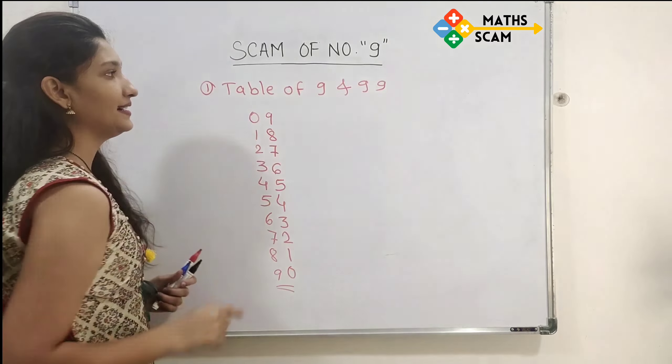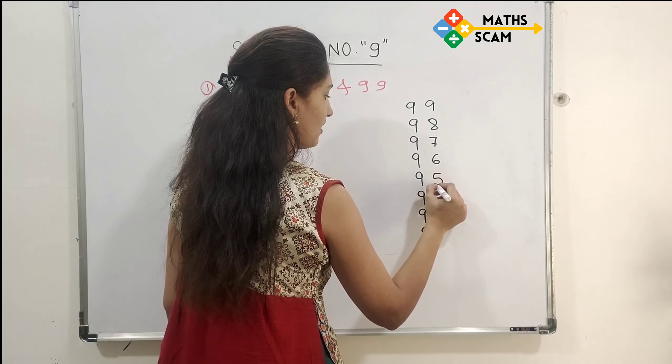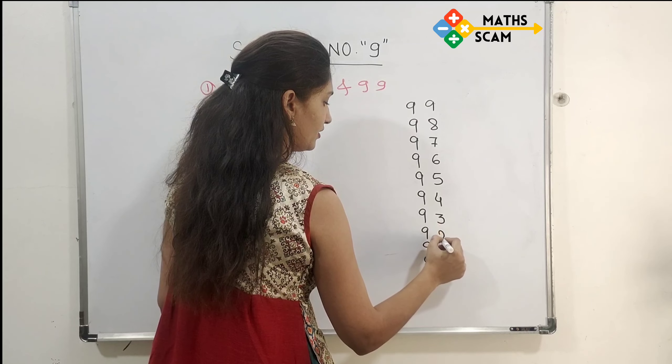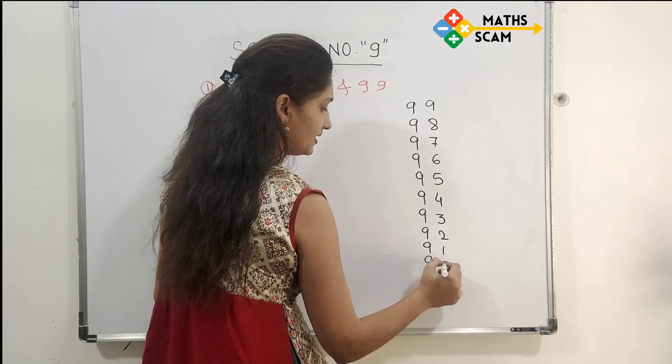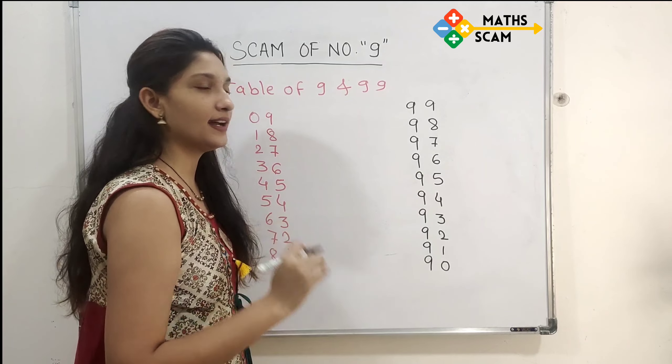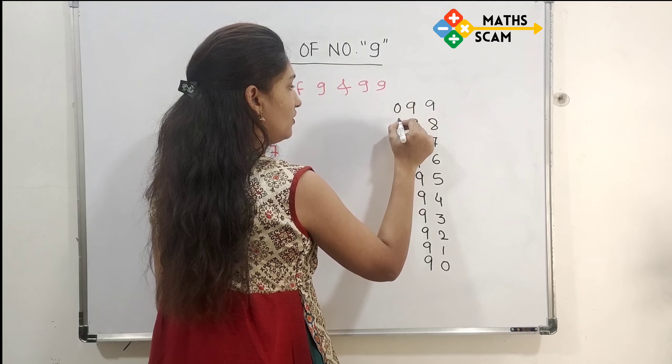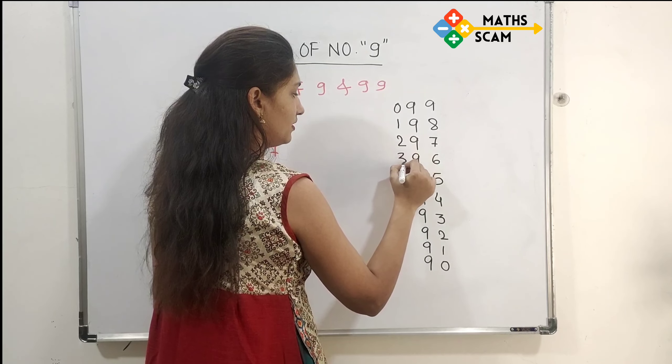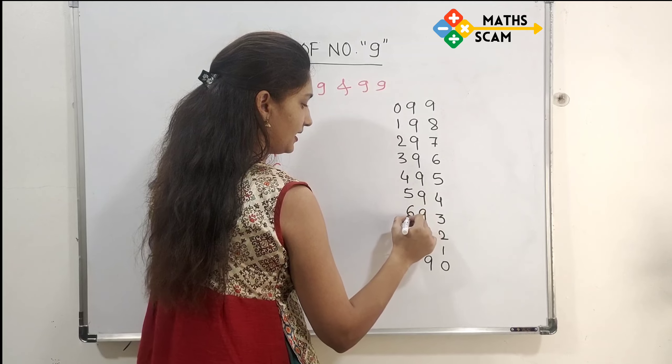Next, let's write the table of 99. Write 9 in the middle as it is. On the right side, write 9 to 0 in descending order: 9, 8, 7, 6, 5, 4, 3, 2, 1, 0. And on the left side, write 0 to 9 in ascending order.